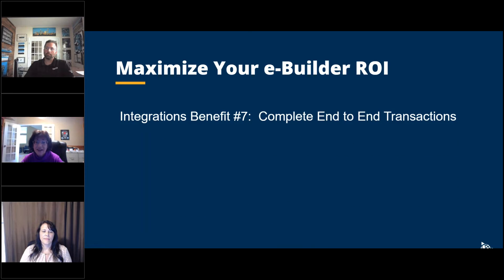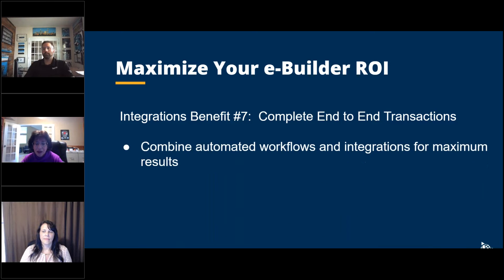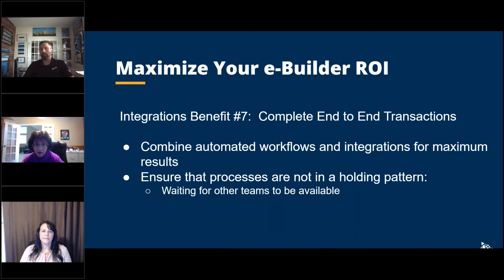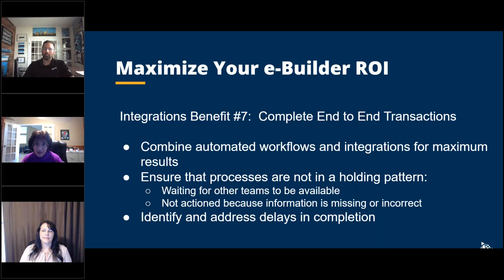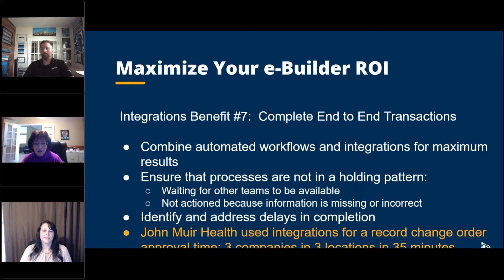Benefit number seven is the ability to complete end-to-end transactions. By combining automated workflows in eBuilder with integrations, that's where you maximize results. You can ensure processes are not in a holding pattern — waiting for people to be available, or held up due to missing or incorrect information that nobody flagged. Integrations bring issues to the forefront so things don't linger. As an example, John Muir Health used integrations to get change orders from three different companies at three different locations approved in just 35 minutes.